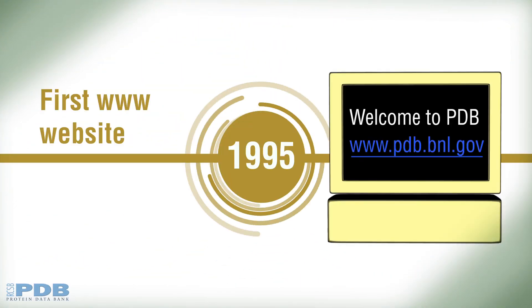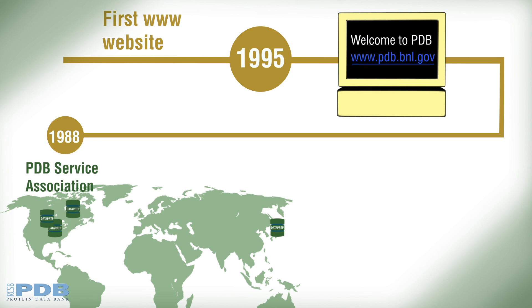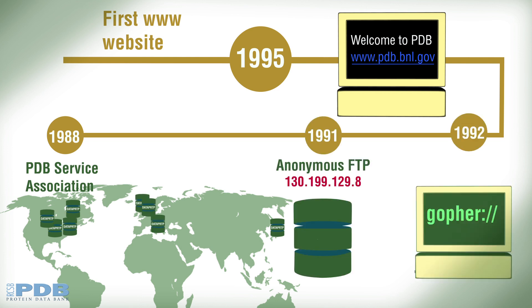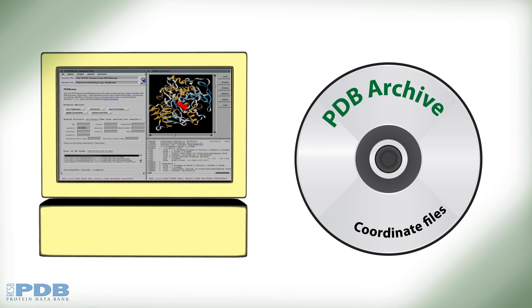In 1995, the PDB archive became accessible for the first time through a WWW website. The PDB holdings were accessible online through various services since 1988. However, the new website equipped with a browser marked a new chapter in data distribution. Researchers could still request the full archive on CD-ROM.